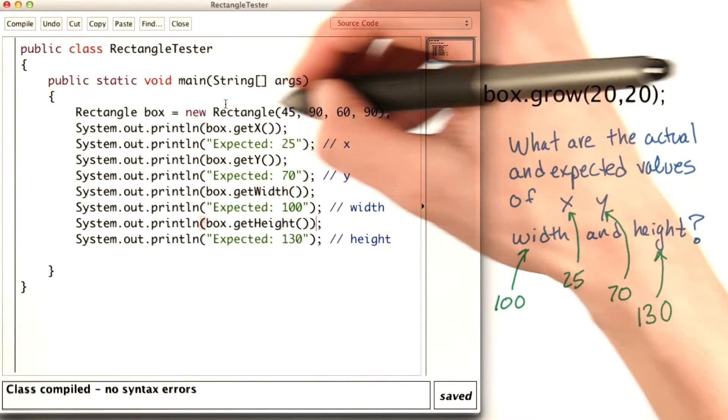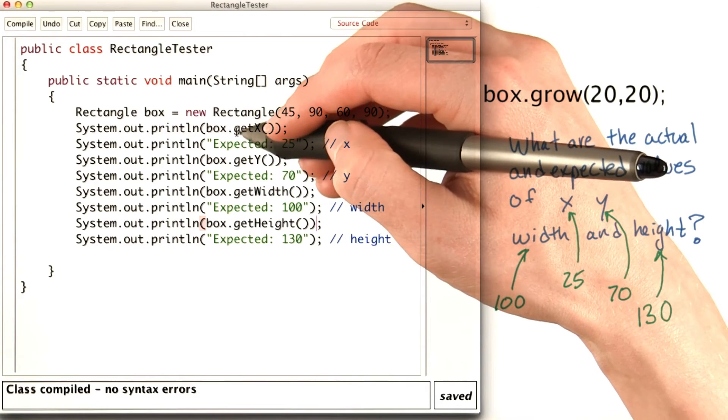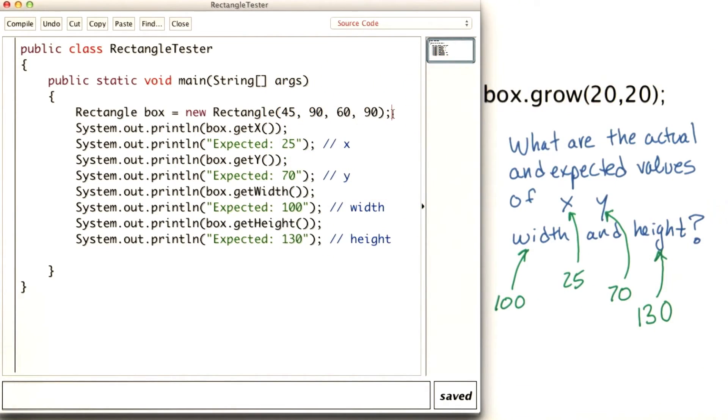It looks like I created the rectangle, and then printed out the actual and expected values without actually calling grow.